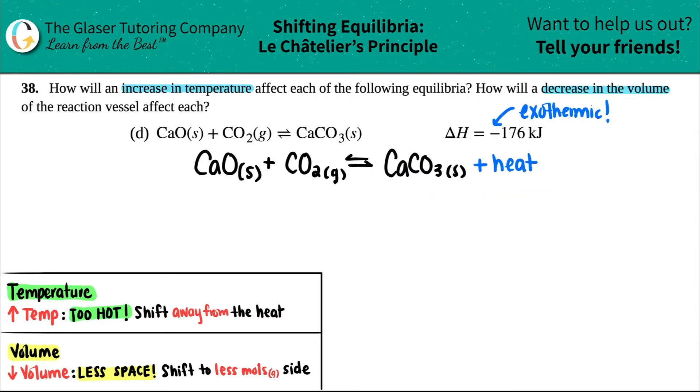Once I do that, I don't care about the delta H anymore—I have all the information I need. I can answer any Le Chatelier's Principle question. In this case we have two: we're going to increase the temperature and decrease the volume. Let's increase the temp first.